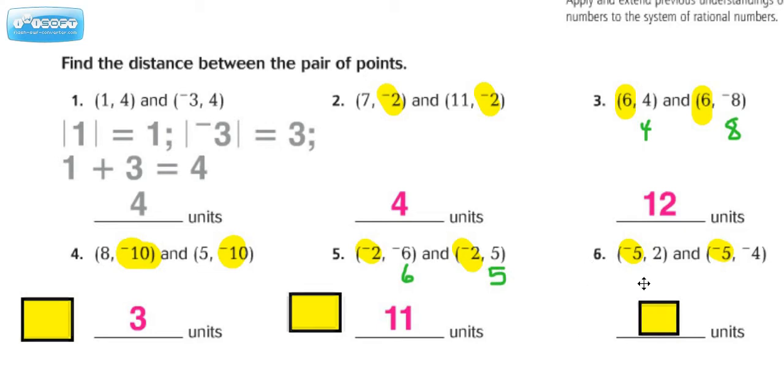For number 6, the coordinates that don't match are the y-coordinates in this case. The absolute value of a 2 is 2. The absolute value of a negative 4 is 4. If we combine a 2 and a 4, that's going to give us 6.